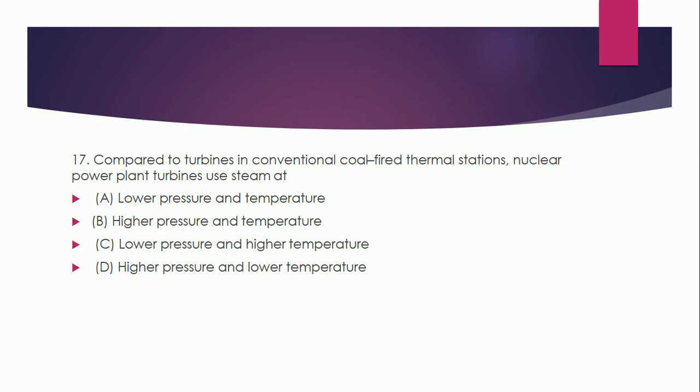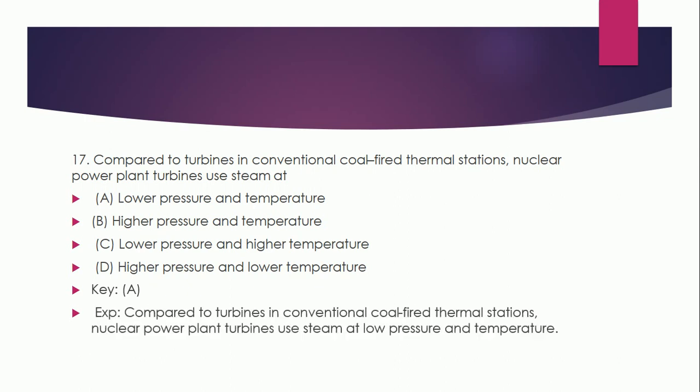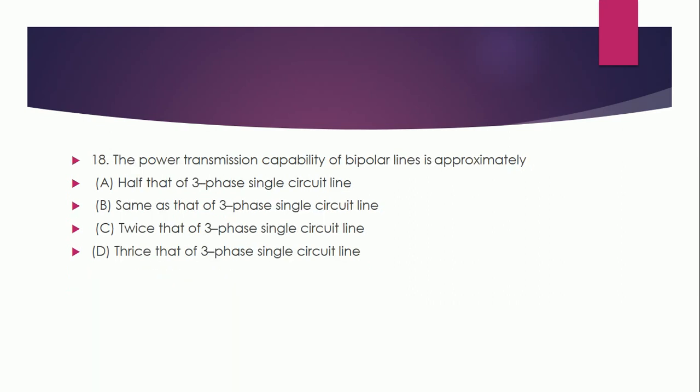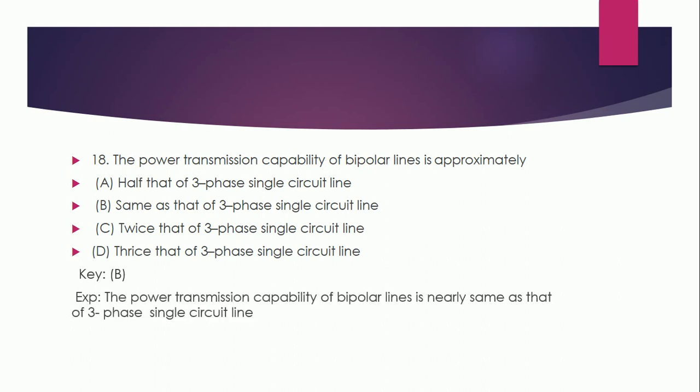Question 17: Compared to turbines in conventional coal-fired thermal stations, nuclear power plant turbines use steam at: low pressure and temperature, high pressure and temperature, low pressure and high temperature, or high pressure and low temperature? The correct answer is A — low pressure and temperature. Compared to turbines in conventional coal-fired thermal stations, nuclear power plant turbines use steam at low pressure and temperature. Question 18 concerns the power transmission capability of bipolar lines, which is nearly the same as that of the three-phase single circuit line.